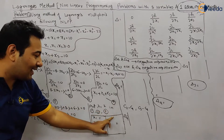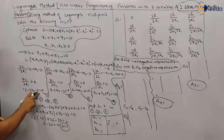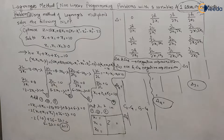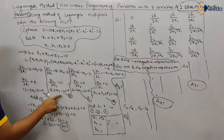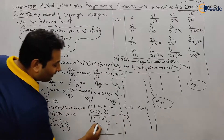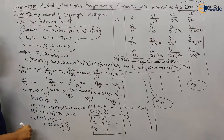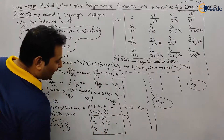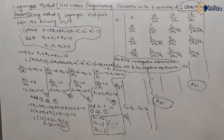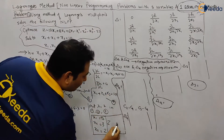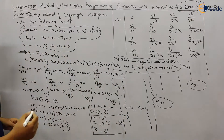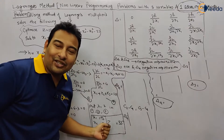We got lambda = 2. Now substitute into equations 1, 2, and 3. From equation 1: 12 minus 2 minus 2x1 = 0, so 10 = 2x1, giving x1 = 5. From equation 2: 8 minus 2 = 6 = 2x2, giving x2 = 3. From equation 3: 6 minus 2 = 4 = 2x3, giving x3 = 2. Substituting x1 = 5, x2 = 3, x3 = 2 into the objective function gives z = 35.